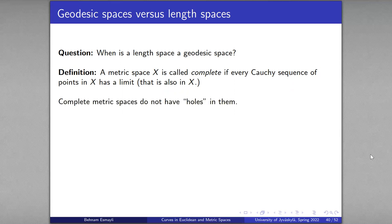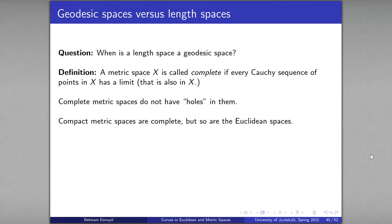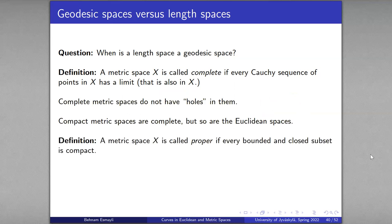Compact metric spaces are complete, since every Cauchy sequence in a compact space has a convergent subsequence. But completeness does not imply compactness: Euclidean space itself is complete but not compact. The other notion we need is that of a proper metric space — one where every bounded and closed subset is compact. The Heine-Borel theorem says compact iff bounded and closed, but only in Rⁿ; this definition is simply saying that Rⁿ is proper.